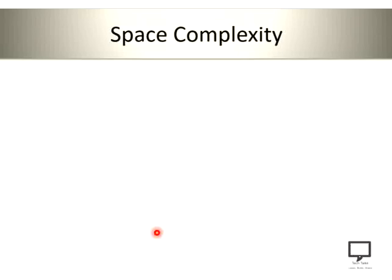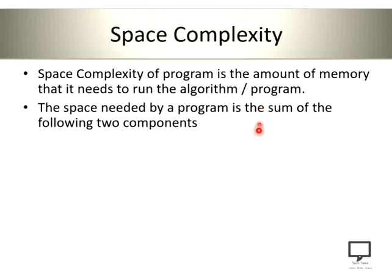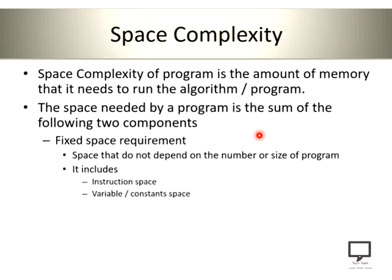Now let's find out what space complexity is. Space complexity is nothing but the amount of memory needed to run the algorithm or program. The space needed by an algorithm is the sum of two components. The first is fixed space requirement — the space required for instructions and for particular variables or constants, because the space requirement for these is constant. For example, the space required for an integer variable is 4 bytes, and the space required for a constant is fixed. So these are included under fixed space requirement.